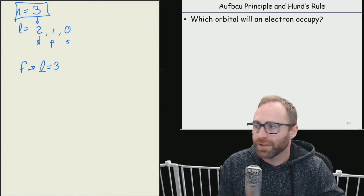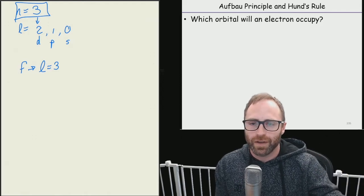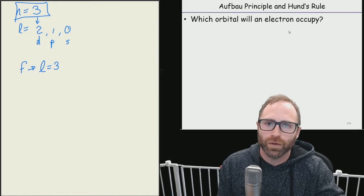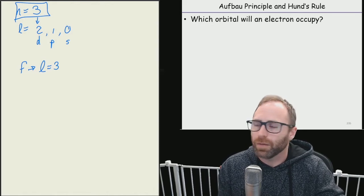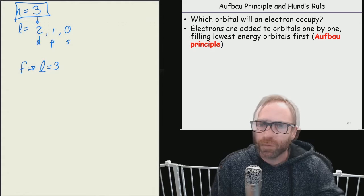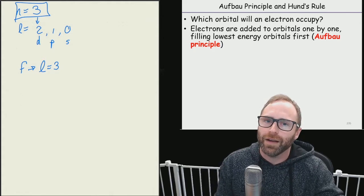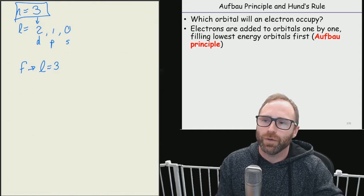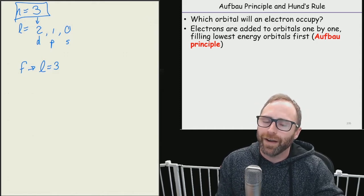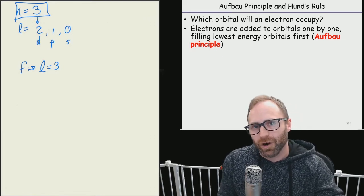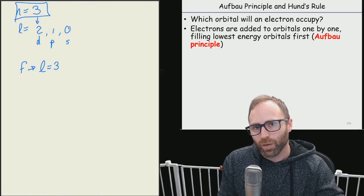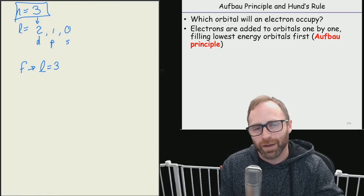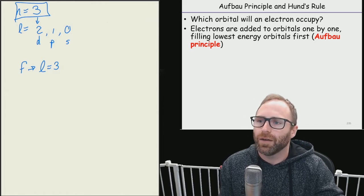We had that energy diagram on the last video where we were saying okay for a multi-electron system, that's how we go through it. Now we're going to give ourselves some rules to help set this stuff up. First off, we're going to add electrons around our nucleus or add electrons to our atom one at a time.